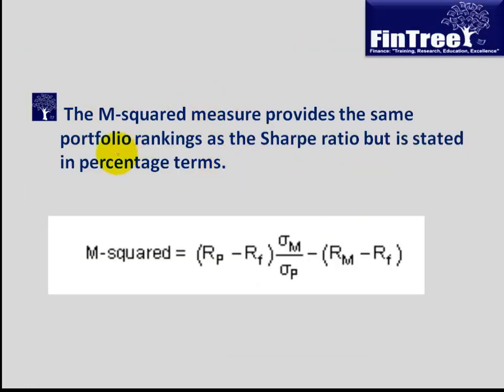Let's look at this formula first. The M-squared measure provides the same portfolio rankings as the Sharpe ratio but is stated in percentage terms. The first look at this formula might give you an intuition that it looks complicated. Let's read through this: M-squared = (R_P - R_f) × (σ_M / σ_P) - (R_M - R_f). What's the intuition behind this? This could be best understood in terms of an example.